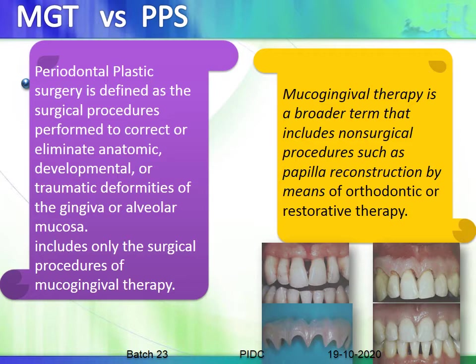The difference between mucogingival therapy and periodontal plastic surgery: periodontal plastic surgery is defined as surgical procedures performed to correct or eliminate anatomic, developmental, or traumatic deformities of the gingiva or alveolar mucosa. Mucogingival therapy is a broader term that includes non-surgical procedures as well, such as papillary construction by means of orthodontic or restorative therapy.